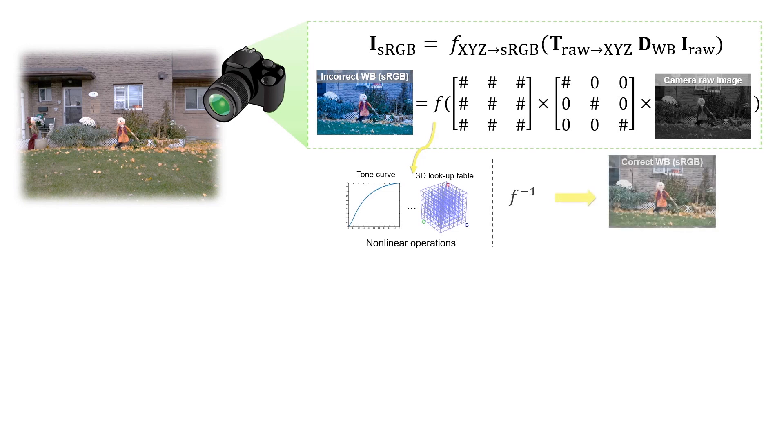To properly correct an sRGB camera image, the entire rendering chain must be reversed. Even with the manual selection of the appropriate white value in the image scene, we cannot undo the effects of the initial incorrect white balance.